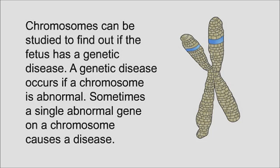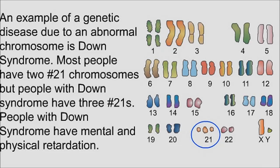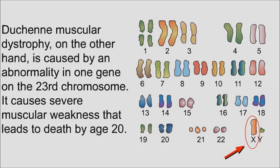All cells of a person have the same genetic material, so checking amniotic fluid cells is just like checking the fetus's cells. Chromosomes can be studied to find out if the fetus has a genetic disease. An example is Down syndrome, where people have three number 21 chromosomes instead of two, causing mental and physical developmental delays. Duchenne muscular dystrophy, on the other hand, is caused by an abnormality in one gene on the 23rd chromosome, leading to severe muscular weakness and death by age 20.